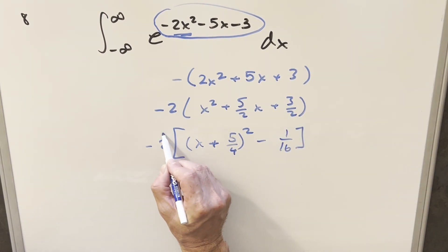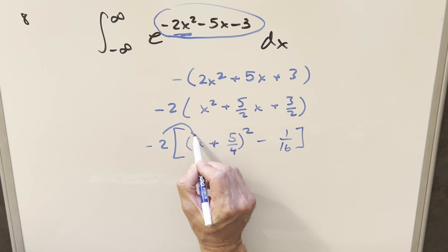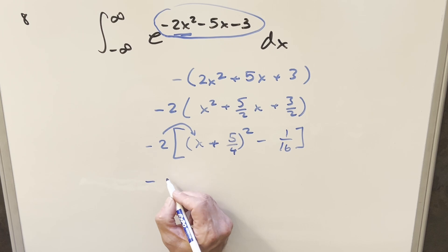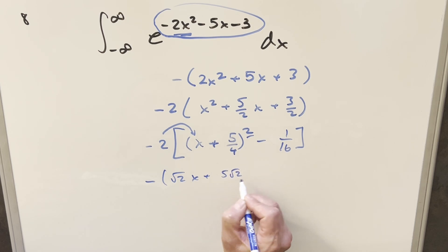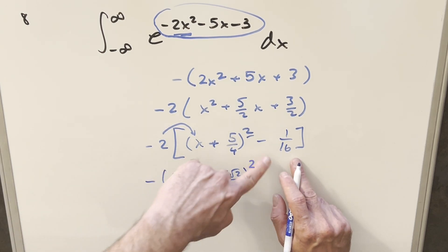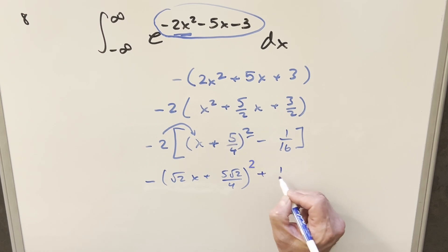And then let me kind of distribute stuff back in. I'm going to distribute in the 2 here and the minus 2 here. So here, I'll keep a minus sign out for this part, and I distribute a 2 in here. Inside, because this is squared, this is going to become square root 2x plus 5 square root of 2 over 4. Then minus 2 times minus 1 over 16 is a plus 1 over 8.